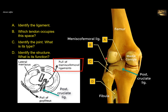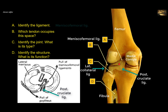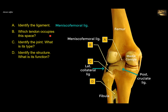You can see that the lateral meniscus is not attached to the lateral collateral ligament, like the medial meniscus is. It increases the congruity of the meniscus with the changing surface of the femoral condyle, as well as it protects the posterior horn of the lateral meniscus by pulling it out of harm's way during movements of the knee joint. Which tendon occupies this space?